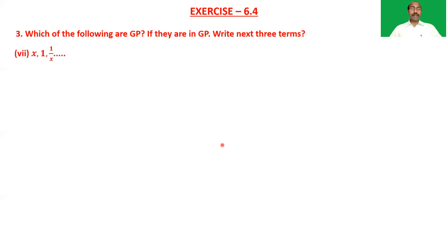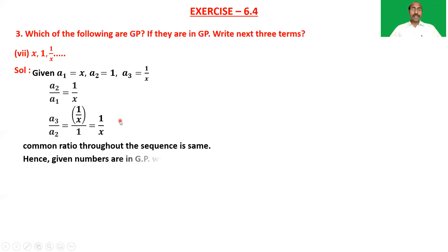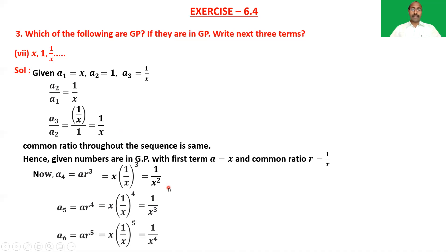Seventh sequence: x, 1, 1/x, and so on. a₁ = x, a₂ = 1, a₃ = 1/x. a₂/a₁ = 1/x and a₃/a₂ = (1/x)/1 = 1/x. The common ratio is the same, so the given numbers are in GP. The next three terms are a₄ = 1/x², a₅ = 1/x³, and a₆ = 1/x⁴.